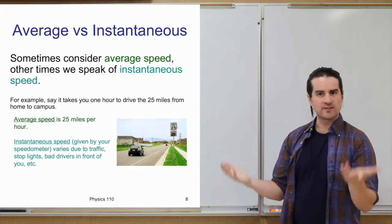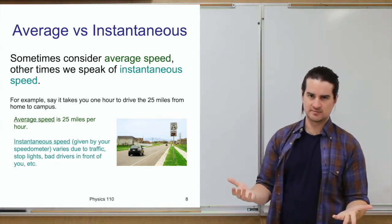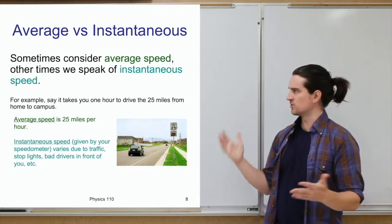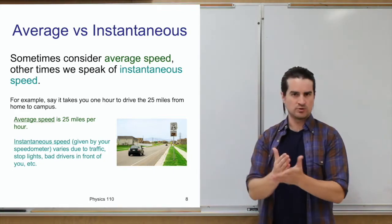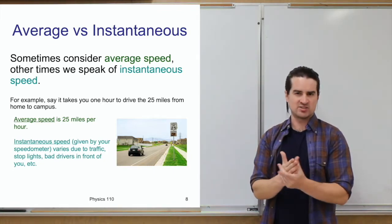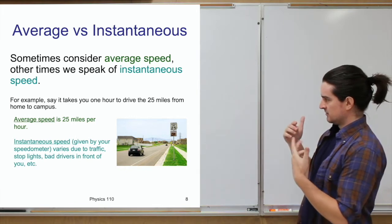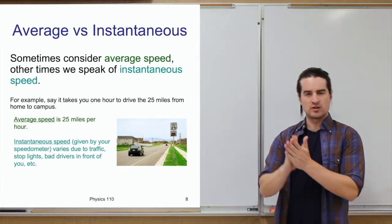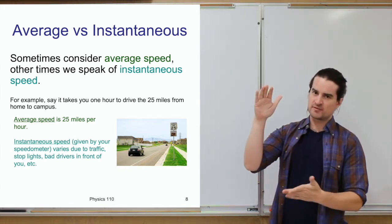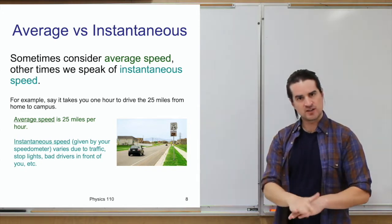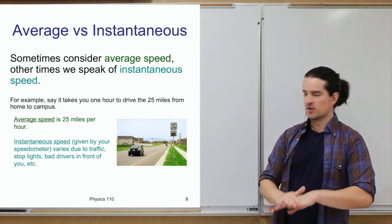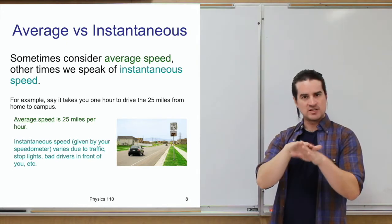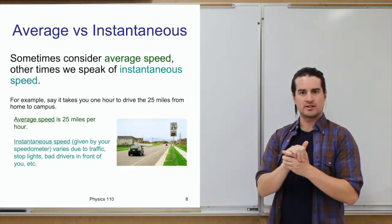However, that's different from your instantaneous speed — what's your speed at that exact moment. Even if your average speed was 25 miles per hour, you could have been going faster than 25 miles per hour at some points, or slower at others. On average it all evens out to 25 miles per hour.